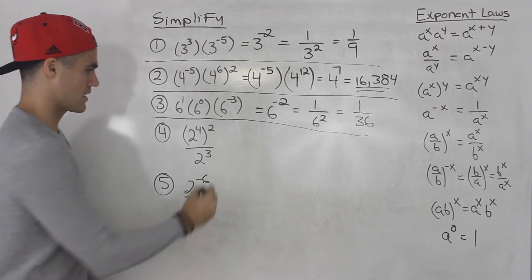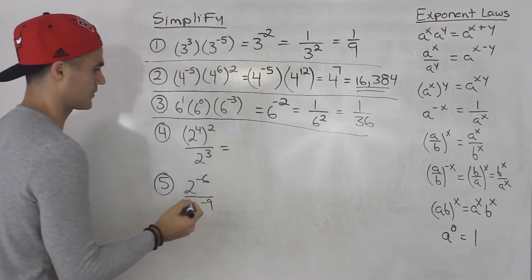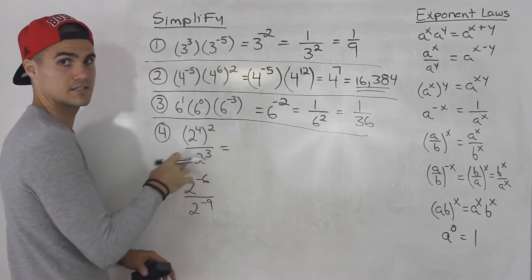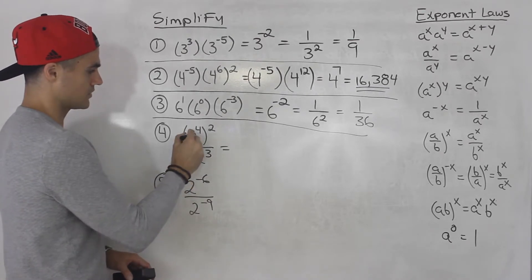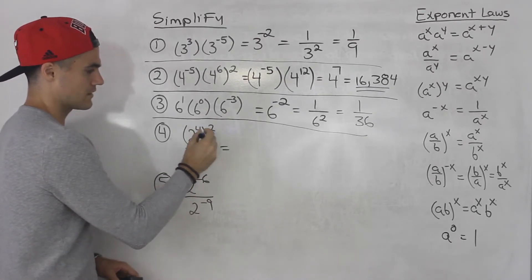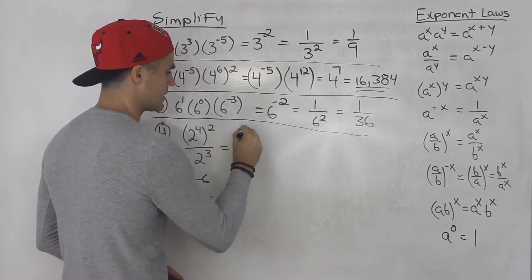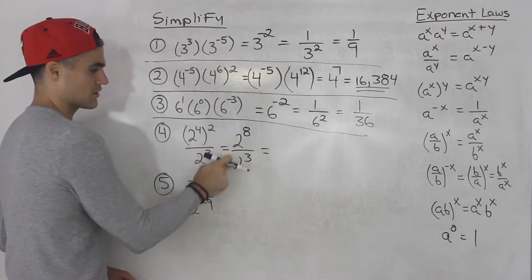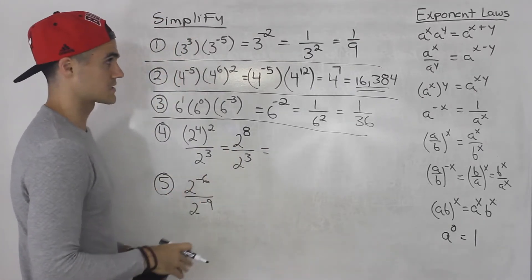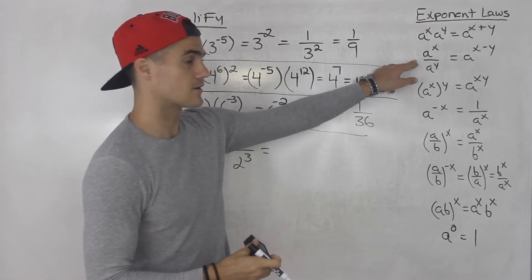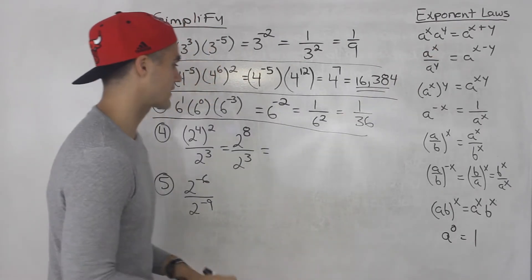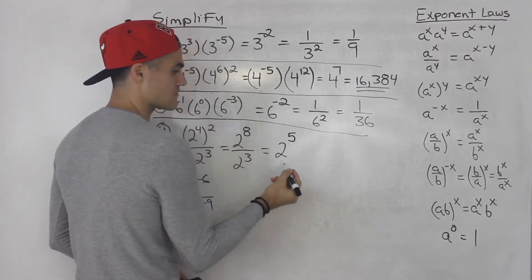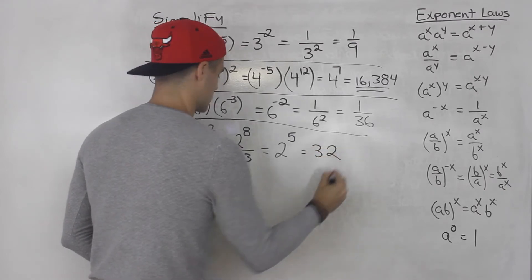Moving on to number four, we have a fraction. With fractions, always try to simplify the numerator and denominator as much as possible first. We have two to the power of four to the power of two — we can multiply the exponents — so that's two to the power of eight over two to the power of three. These are the same base and we are dividing, so we subtract the exponents: eight minus three gives us two to the power of five, which equals 32.